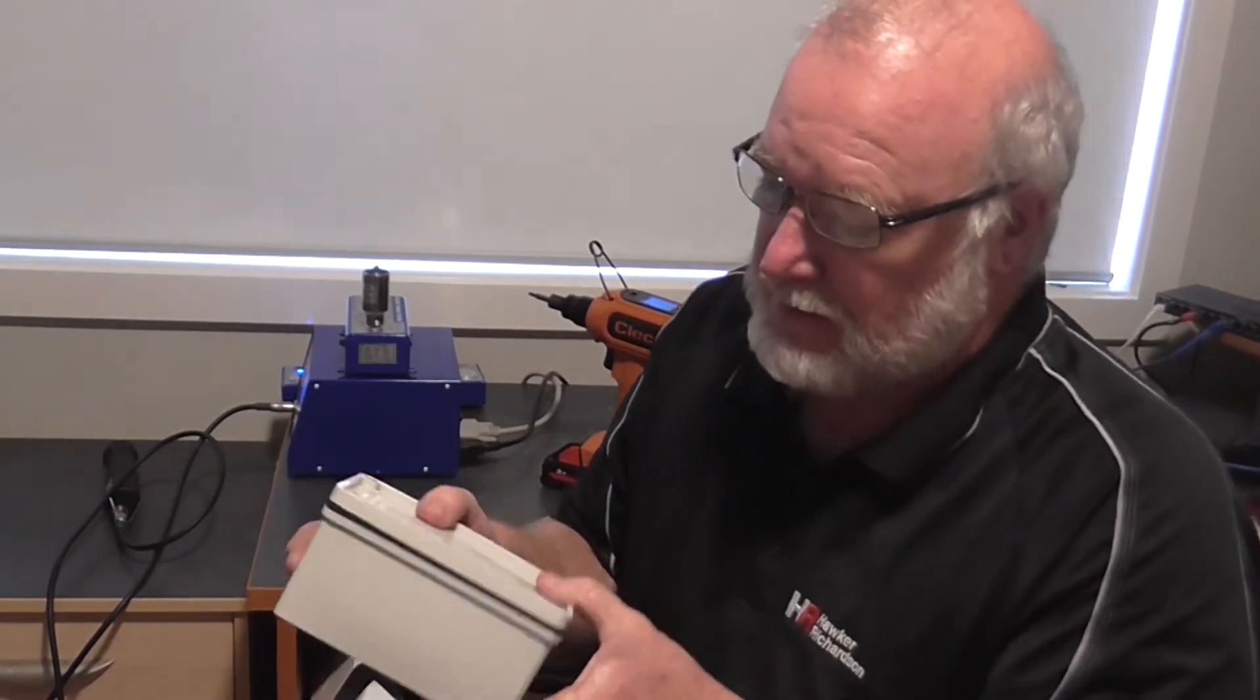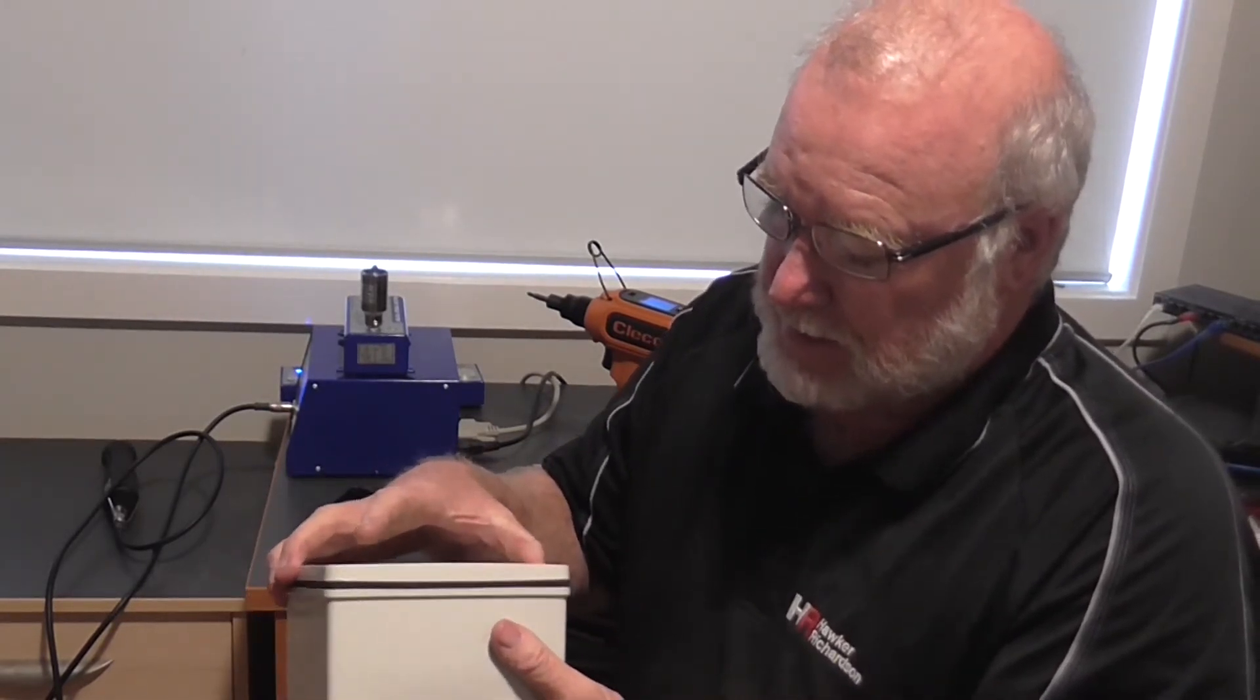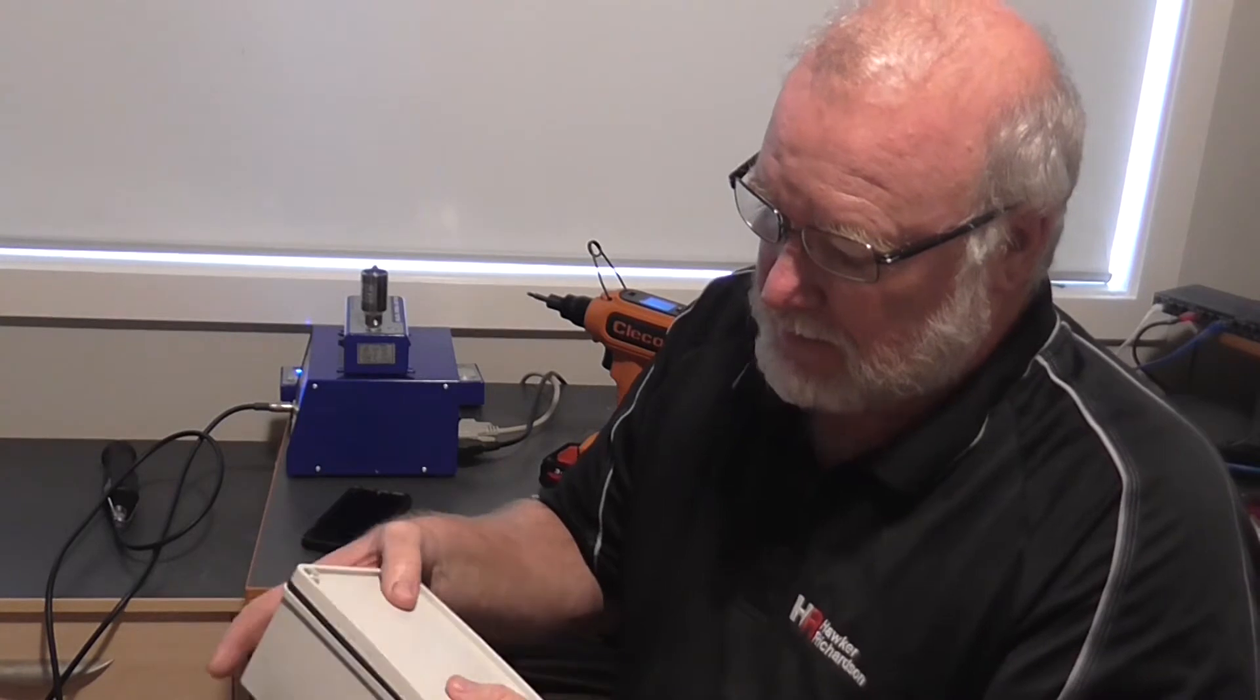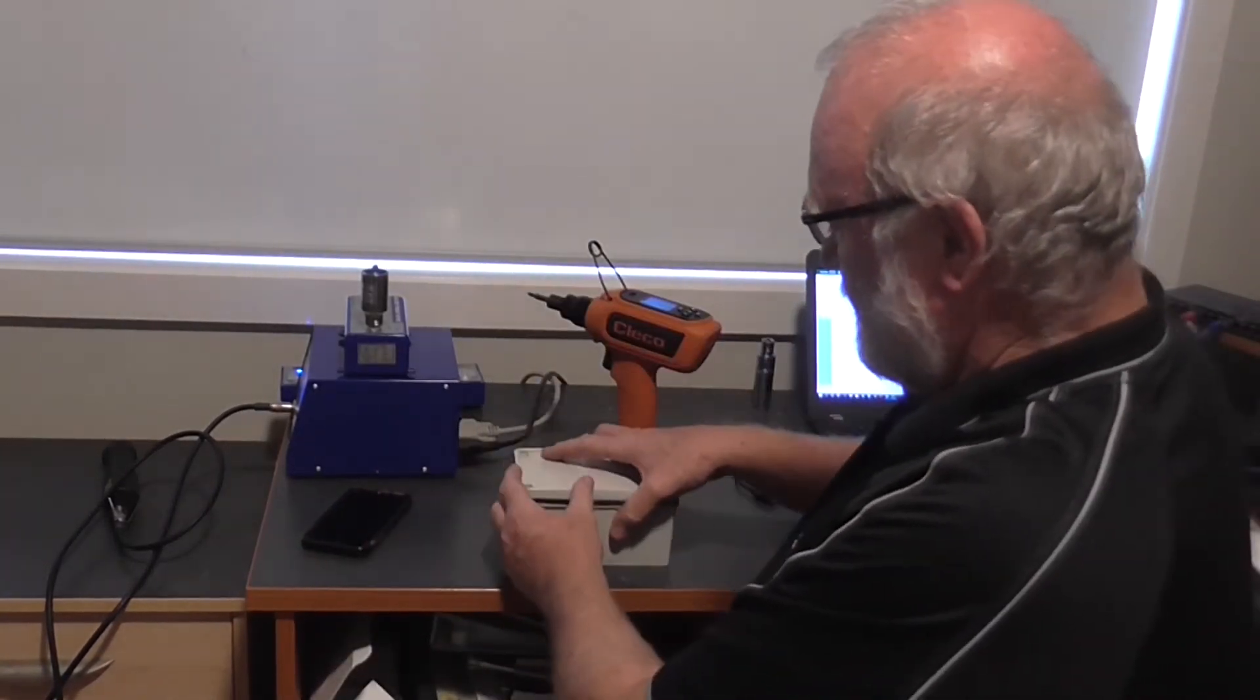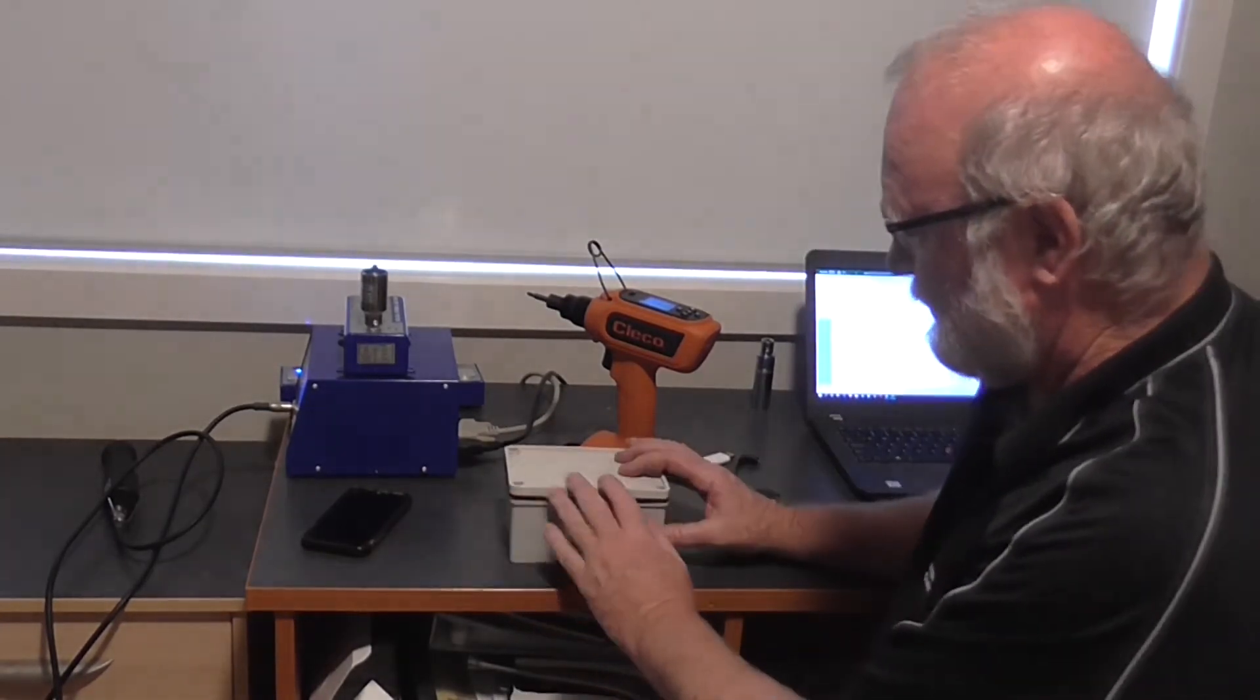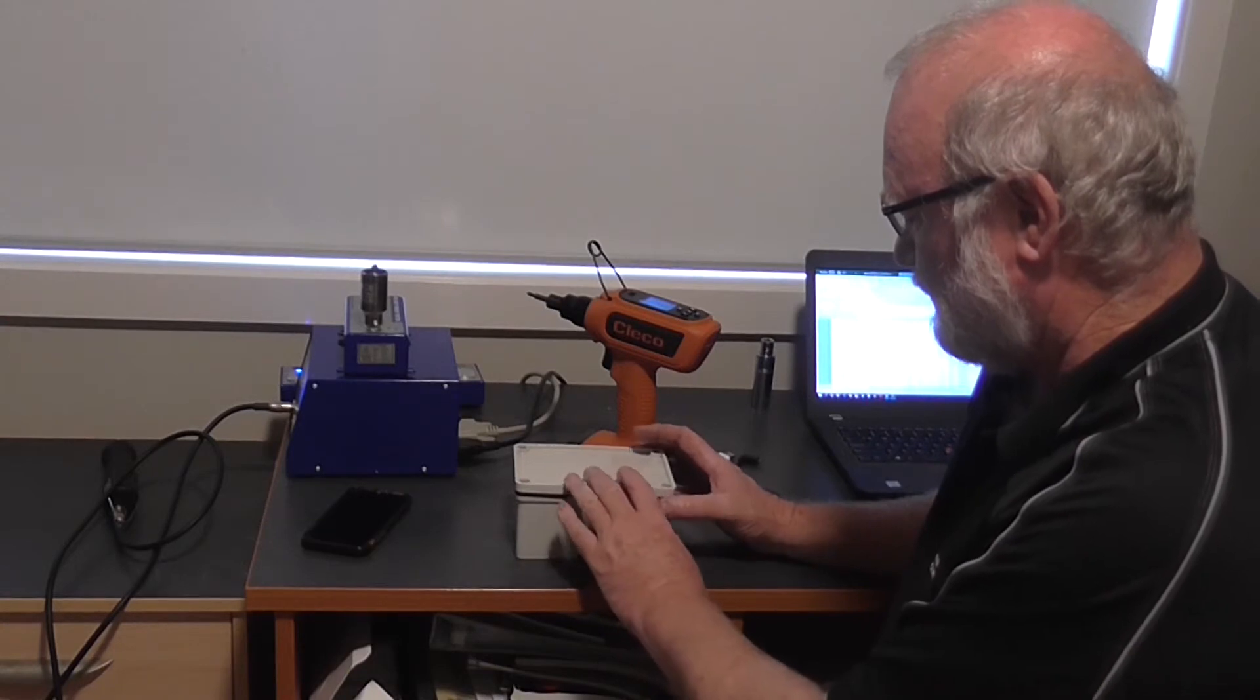So what we have here is an electrical enclosure with a big rubber gasket on it, and we want to show you that when you assemble this enclosure, we want to make sure that the rubber gasket has been put in place.